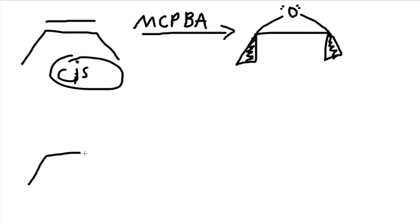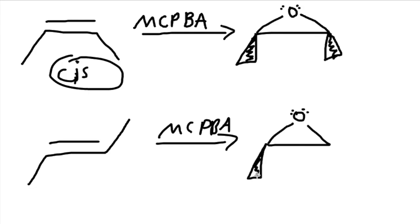Now, the bottom portion that I drew is the trans version. MCPBA again, reactant, and the formation would look like this. Oxygen like this. We have one wedge, and we have another dash here, like this, with the carbons. Again, this is trans because of the hydrogens on different sides.